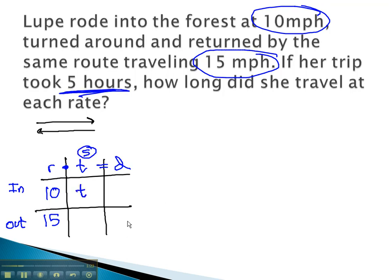When we have the total time, the first cell is t, the second is total, or 5, minus t. This means for our distance, multiplying rate by time, 10t going in, and 15 times 5 minus t coming out. So if it's 10t going in, and 15 times 5 minus t going out, same distance, we can set those equal to each other.